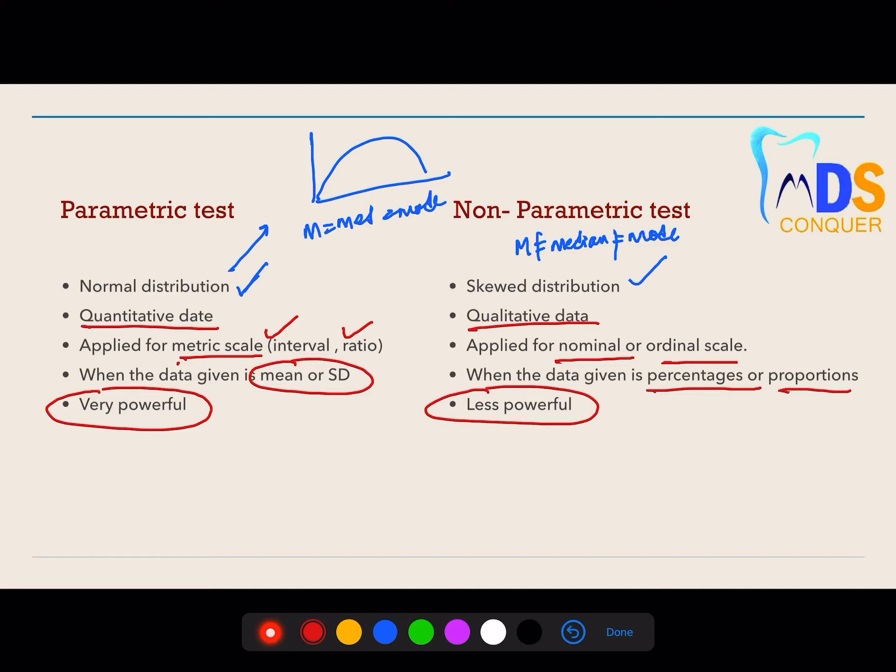For example, if your question is 'write about parametric tests,' then before describing each parametric test, you need to include a heading with the characteristic features that data should follow for a parametric test. You can write all these four or five important points before you start.